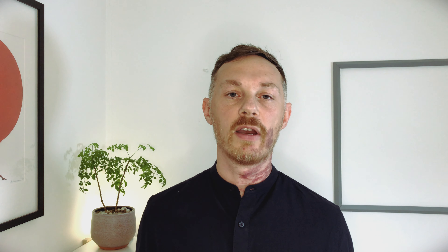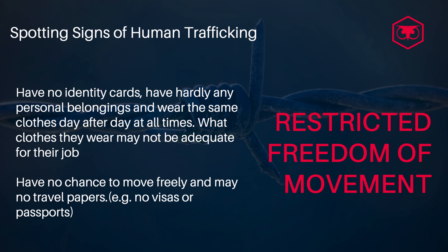The fourth sign is restricted freedom of movement. Victims often have no identity card and hardly any personal belongings. You may see them wearing the same clothes day after day, and those clothes are probably not fit for the job they are doing. Possibly they have no chance to move freely and may have restricted travel documents — for example, no visa or passport to move within the country or internationally.